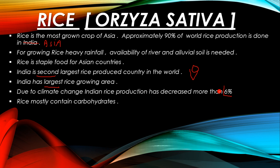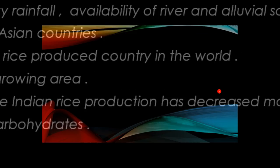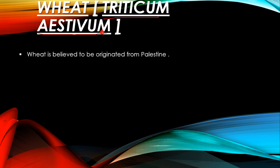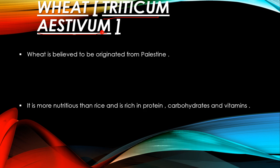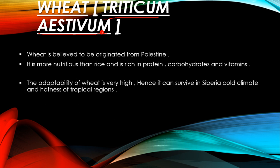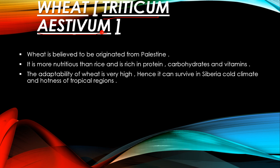Now we will talk about wheat. The scientific name of wheat is Triticum aestivum. Wheat is believed to have originated from Palestine. It is more nutritious than rice and is rich in protein, carbohydrates, and vitamins. The adaptability of wheat is very high, so it can survive in the cold climate of Siberia and the heat of tropical regions.